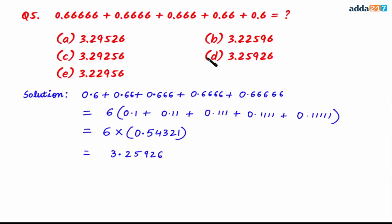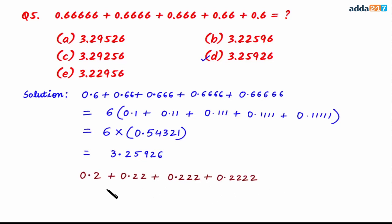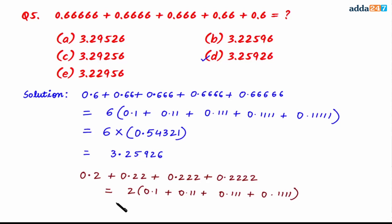This gives 3.25926 — option D is correct. For better understanding with four terms and repeating digit 2: taking 2 as common inside we have 0.1 + 0.11 + 0.111 + 0.1111. With four terms, the sum of ones runs 0.4321. So the answer is 2 multiplied by 0.4321, which equals 0.8642.